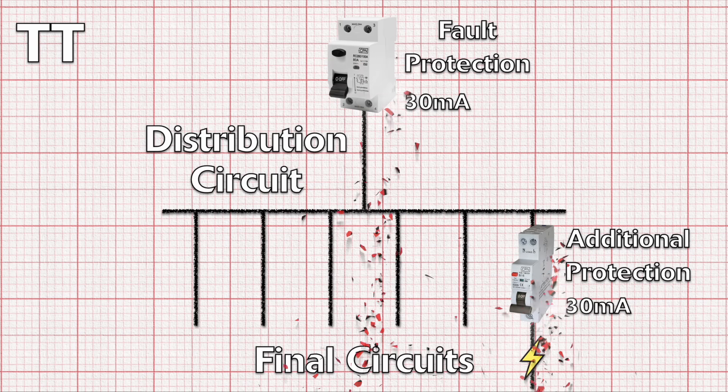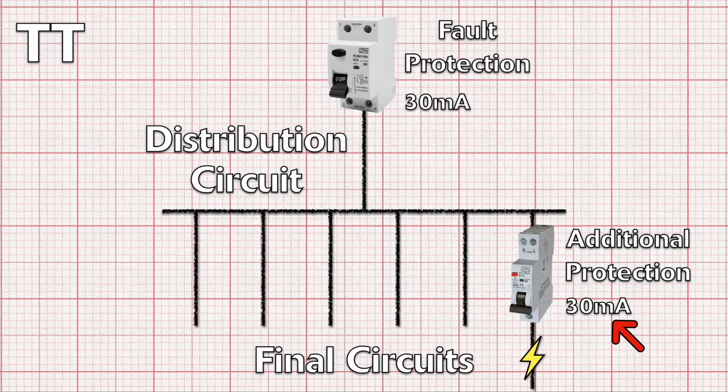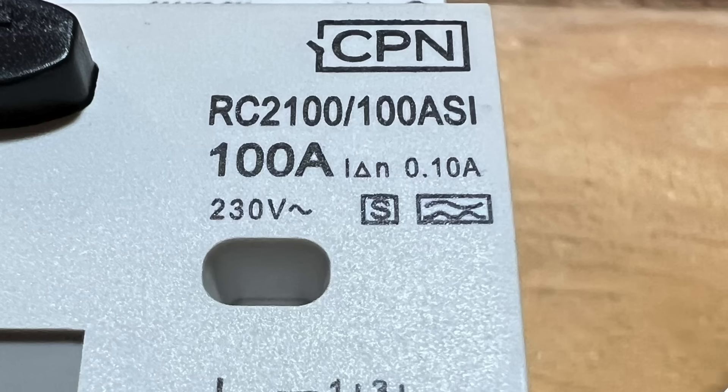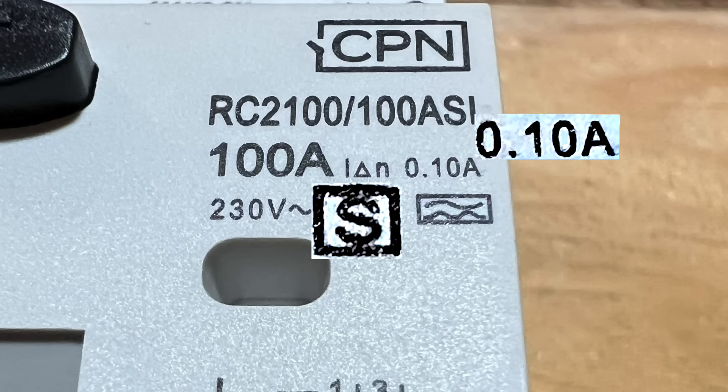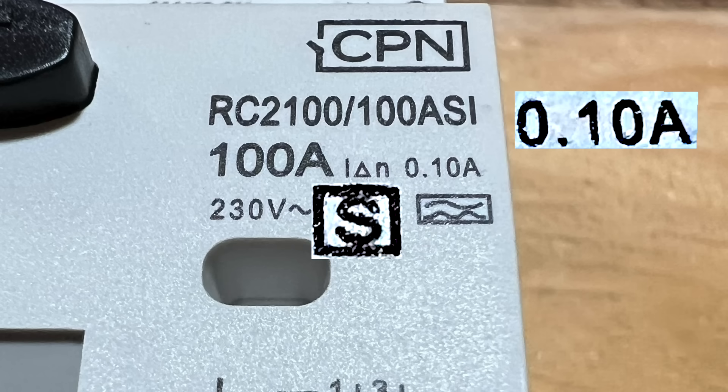So if the RCD protection on the final circuit has a rating of 30 milliamps, the upstream RCD protection on the distribution circuit should be 90 milliamps or above. Most manufacturers will produce a time delayed RCD at 100 milliamps rather than 90 which is even more acceptable.